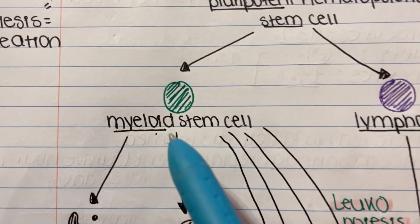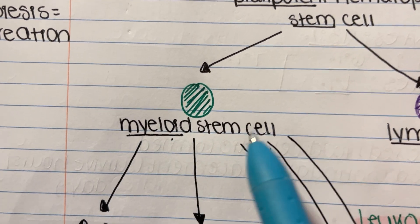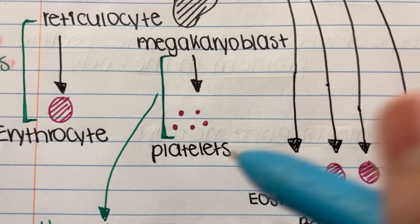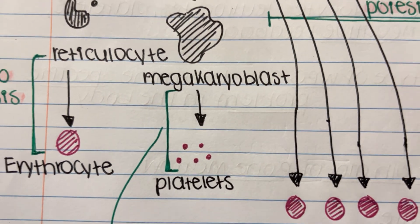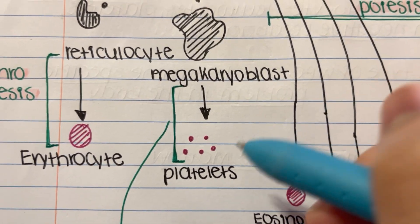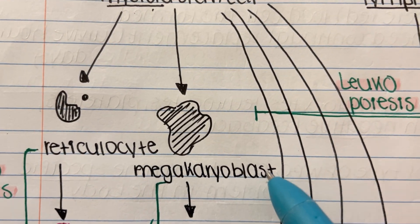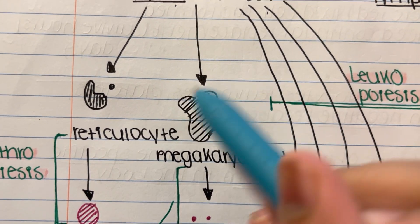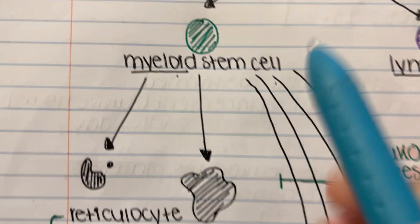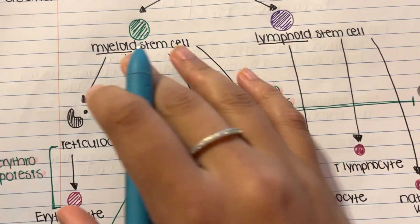The second type of cell the myeloid stem cell can produce is platelets. Platelets are very important in clotting. Before platelets can form, they come from a megakaryoblast — a huge cell that gets phagocytized, and the leftover pieces become platelets. So: myeloid → megakaryoblast → platelet.